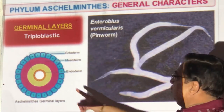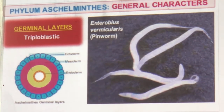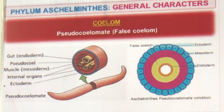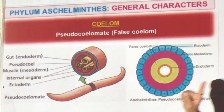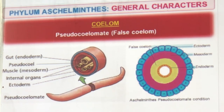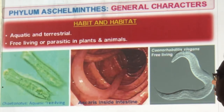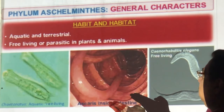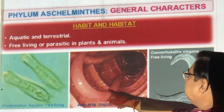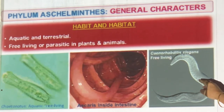Aschelminthes are triploblastic: ectoderm, endoderm, and mesoderm. They are pseudocoelomate — false coelom — because the body cavity is not lined by mesoderm. They may be aquatic or terrestrial, free-living or parasitic. Ascaris lives inside the intestine. Caenorhabditis elegans is a free-living example.